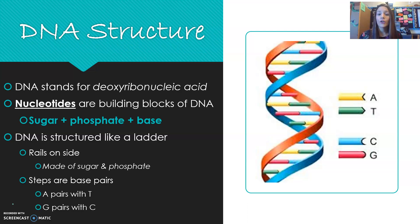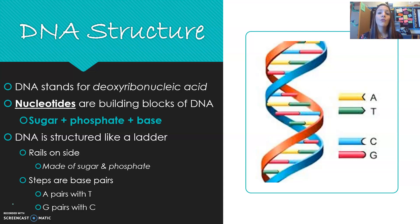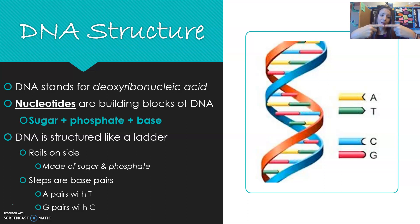There's a sugar in DNA called deoxyribose, and then nucleic acid. A nucleotide — the building block or monomer of DNA — is made of three things: that sugar deoxyribose, a phosphate group, and a base. By base, I'm referring to A, T, G, or C — specifically adenine, thymine, guanine, and cytosine. The DNA structure itself is like a twisted ladder: the rails on the sides alternate sugar and phosphate, and the rungs or steps of the ladder are the base pairs coming together.